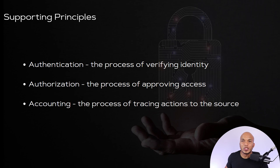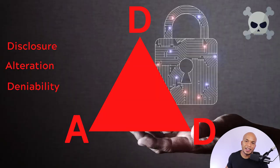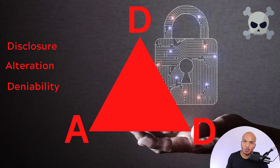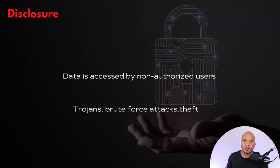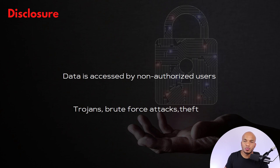Now let's take a look at the opposite triad — the DAD triad. These are what the cyber criminals, basically the bad guys, try to achieve. They try to achieve disclosure, alteration, and deniability. Disclosure is the direct opposite of confidentiality, where data is accessed by non-authorized users. They use tools and weapons like trojans, brute force attacks, and even physical theft sometimes.